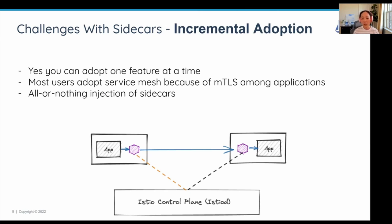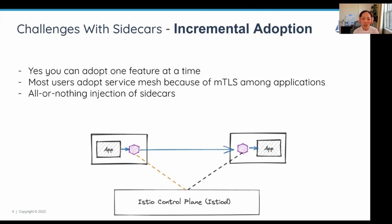The other challenge is incremental adoption. Most of our users are actually using Istio because they love mutual TLS — they want Istio to secure communication between their applications and manage certificates for their application pods. In these simple scenarios, when you just need Istio for mutual TLS, unfortunately you still have to run the entire Istio proxy sidecar, because we don't have a simple version that only provides the layer 4 mutual TLS function.